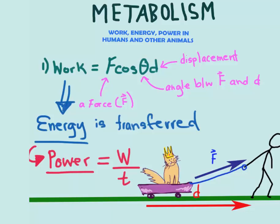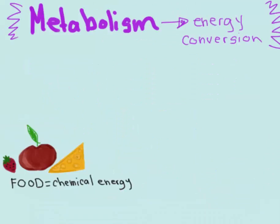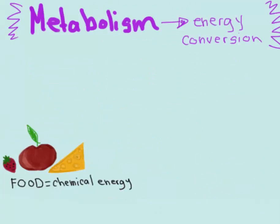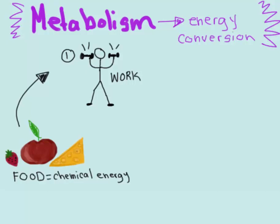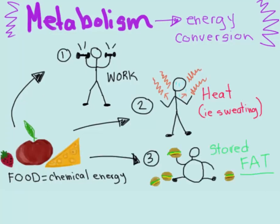So how does this apply to metabolism? Food is stored chemical energy. There is energy conversion occurring in our bodies where the stored chemical energy in food is converted into work, heat, or fatty tissues. When the chemical energy is converted into work, we can do physical activities.